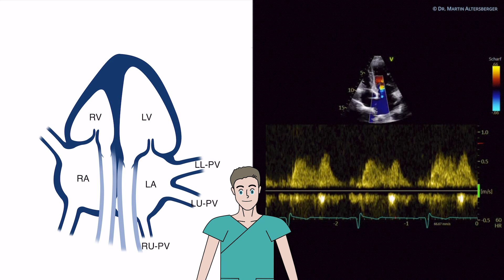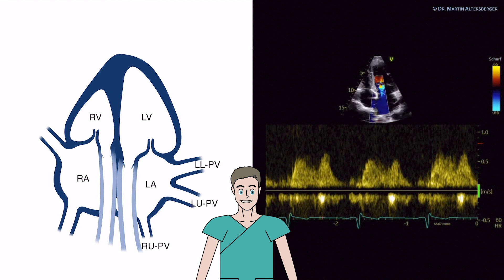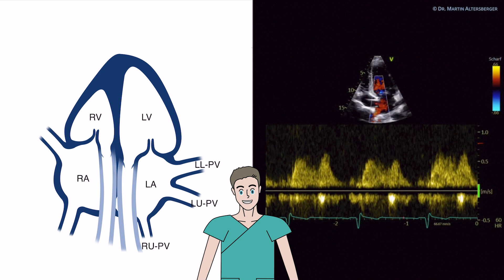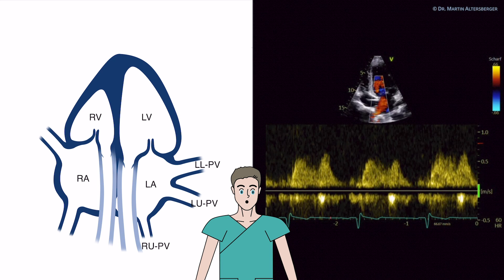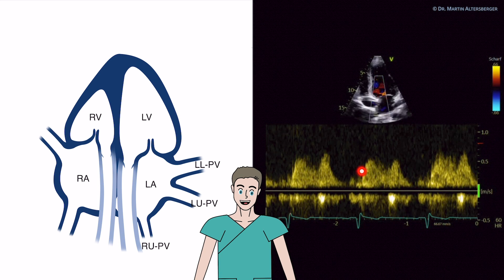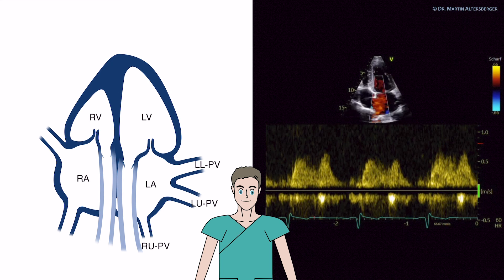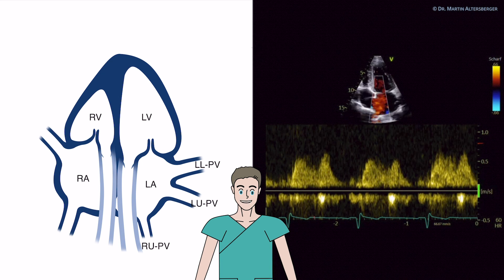We have an S-wave and a D-wave — a systolic and a diastolic wave. Sometimes there is an additional notch in the S-wave giving S1 and S2, but here we have a nicely depicted S-wave and D-wave. Normally the S-wave is larger than the D-wave. In this very young, healthy, and fit individual, the D-wave is a little bit higher than the S-wave, which can be a finding in young healthy athletes.